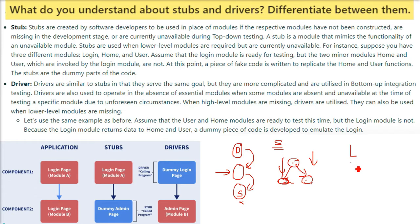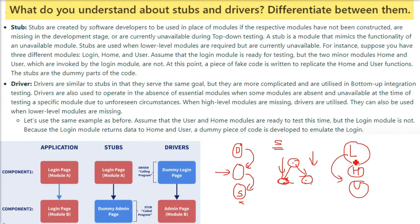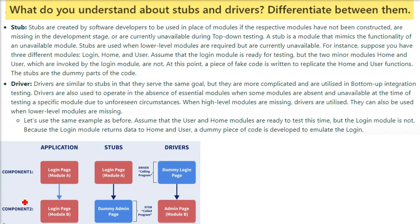For example: we have a login, a home, and a user module. The login is ready for testing, but home and user are not ready. We need to test the login module, but without home and user we cannot check it properly. So for home and user, we write a few lines of code that will just emulate or mimic those modules.